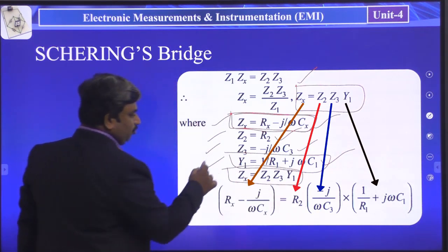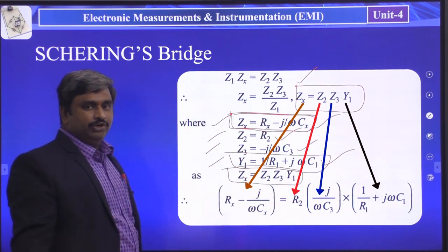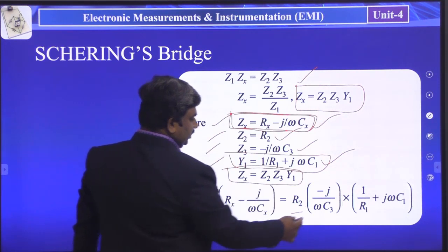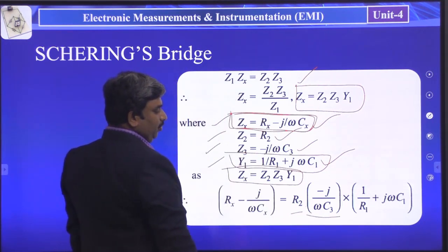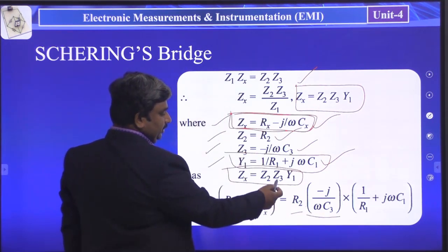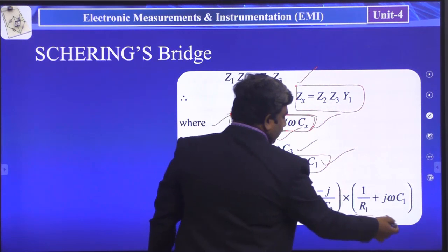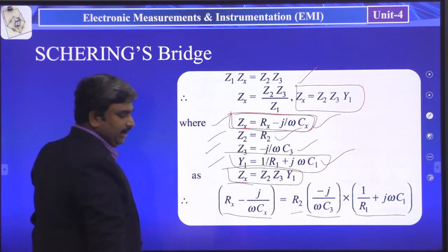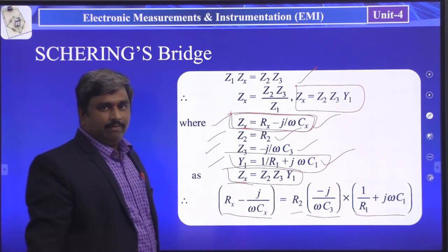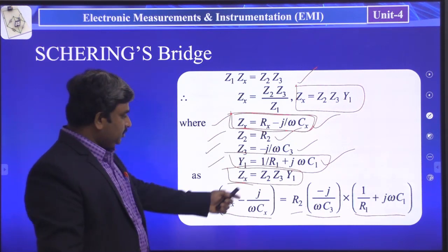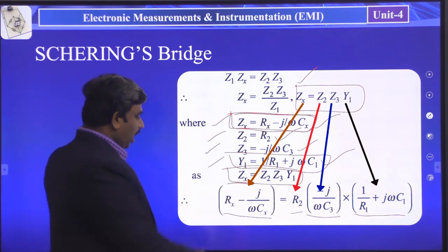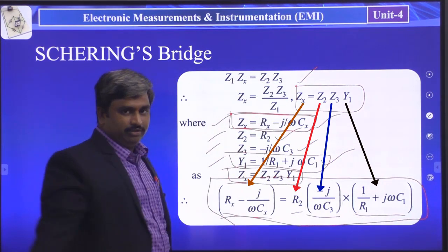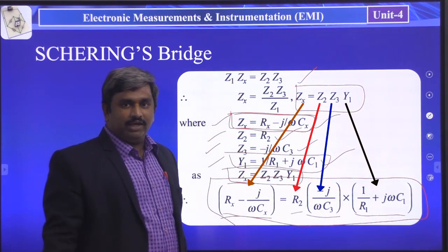Now we have the equation: ZX = Z2 · Z3 · Y1, that is ZX = R2 · (−j/(ωC3)) · (1/R1 + jωC1), and ZX = Rx − j/(ωCX). This is the expression for the bridge balancing condition of the Schering Bridge — written directly from the bridge circuit.